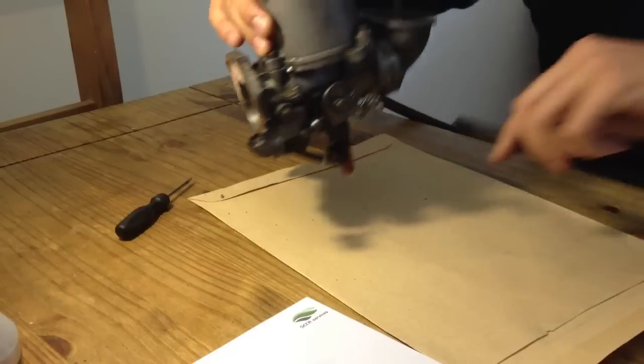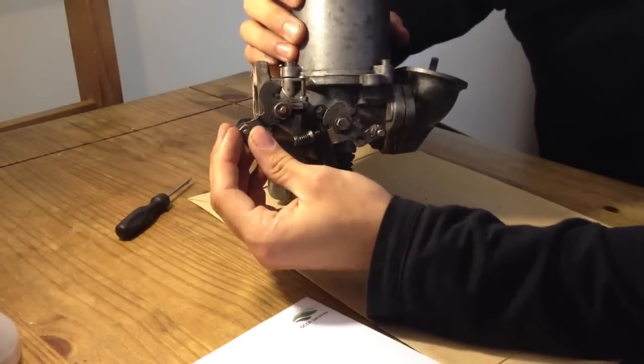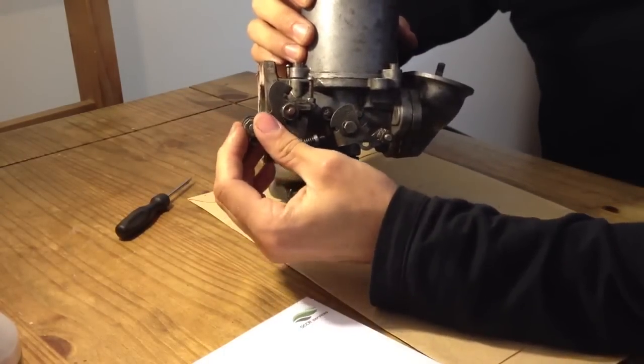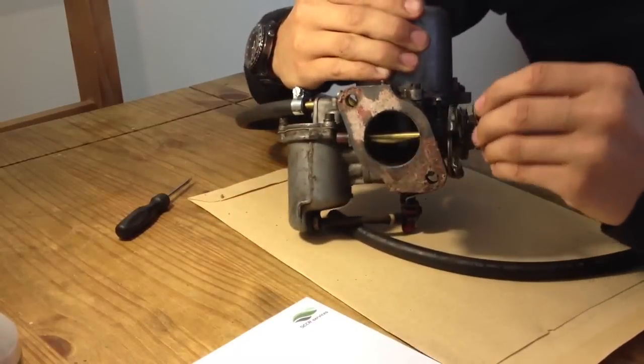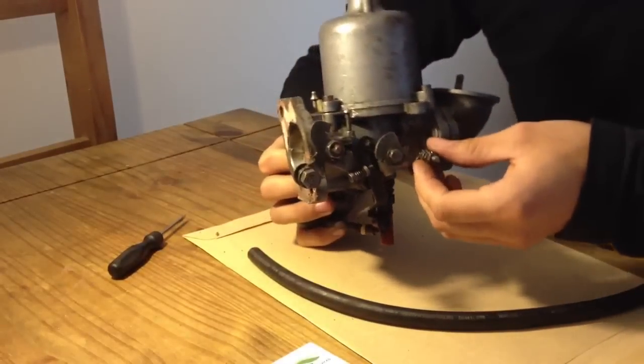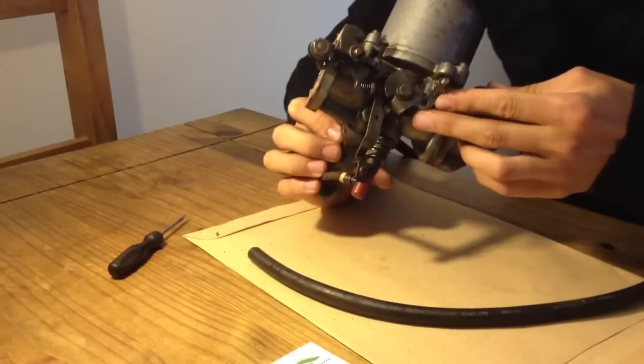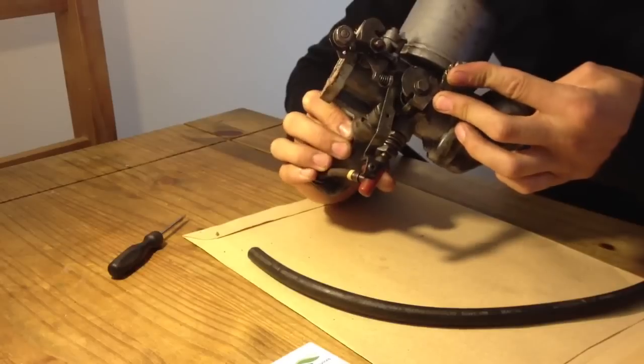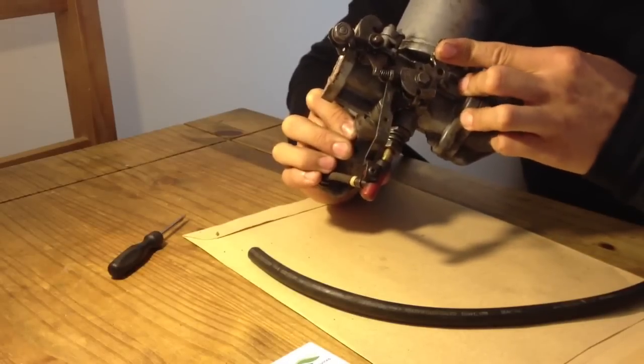Moving around again, here we have the location where your throttle cable will connect, which will actuate the butterfly. Next to this we have the choke lever which actuates the fuel jet at the bottom, as you can see it moving down.